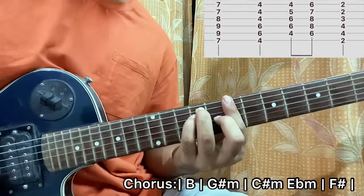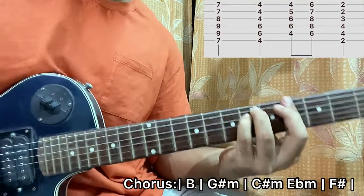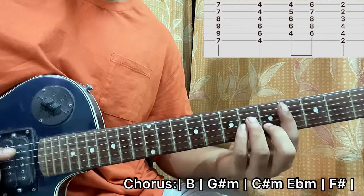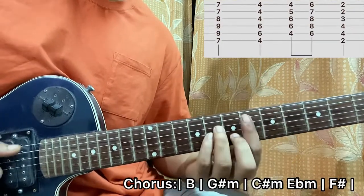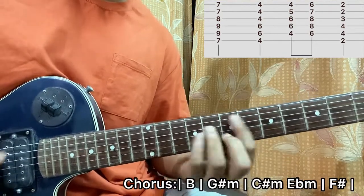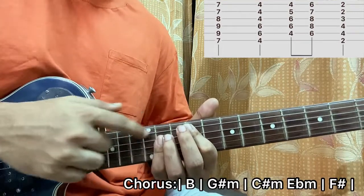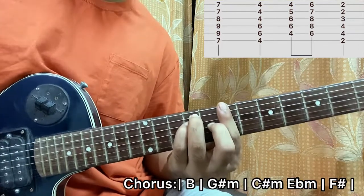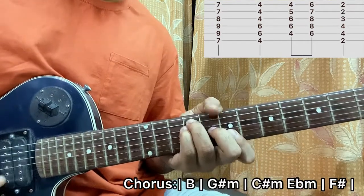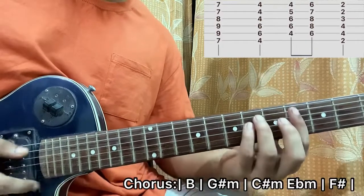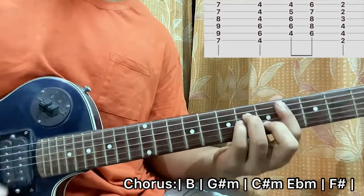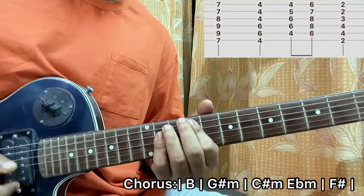We get to the chorus. We'll start out with the B major chord over here. Then, a G sharp minor. Then, we go to the F sharp major chord. Then, we end the chorus with an E major chord. That's how you play the chorus.